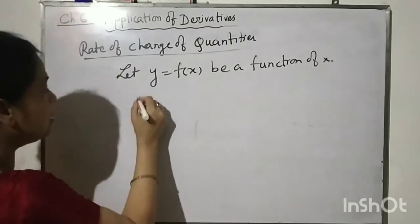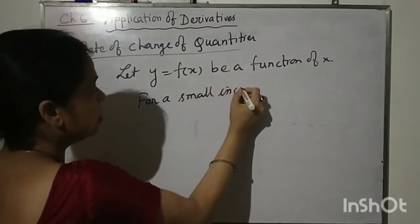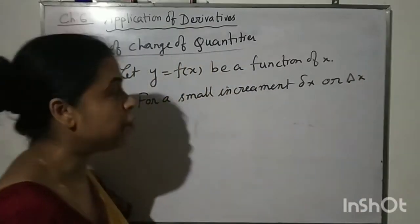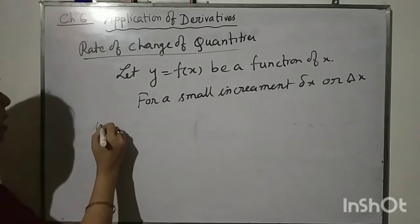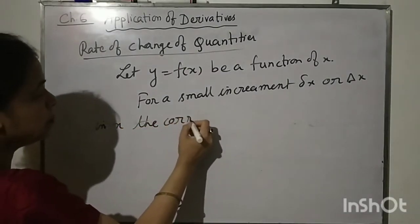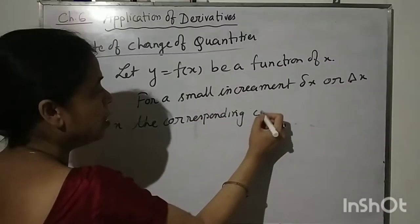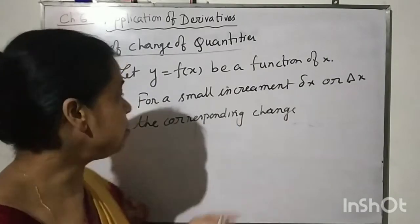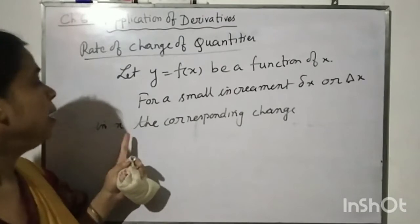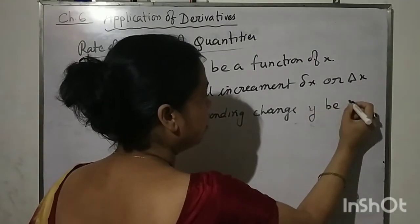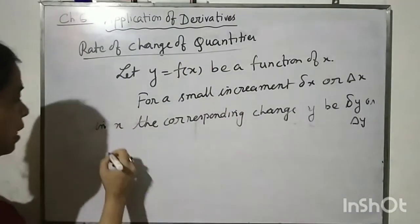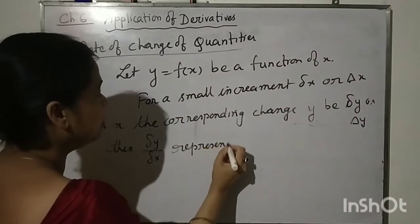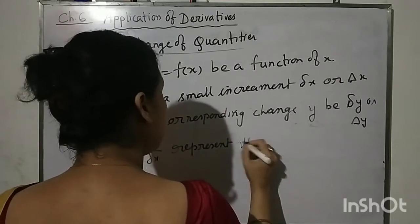So for a small increment delta x in x, the corresponding increment in y is delta y. Increment means just a change — this may be positive or this may be negative. Then delta y by delta x represents the change in y per unit change in x.